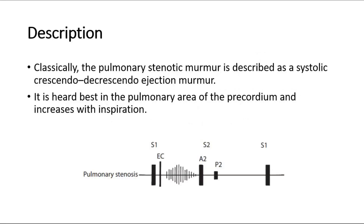Classically, the pulmonary stenotic murmur is described as a systolic crescendo-decrescendo ejection murmur. It is heard best in the pulmonary area of the precordium and increases with inspiration. This picture shows the pulmonary stenosis murmur, which is a systolic murmur heard between the first and second heart sounds.